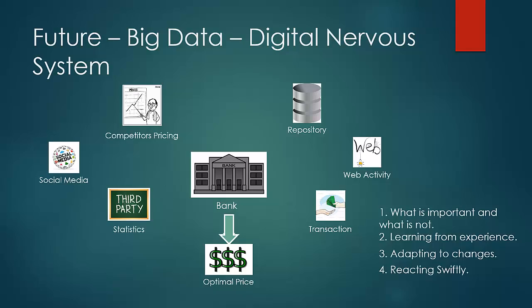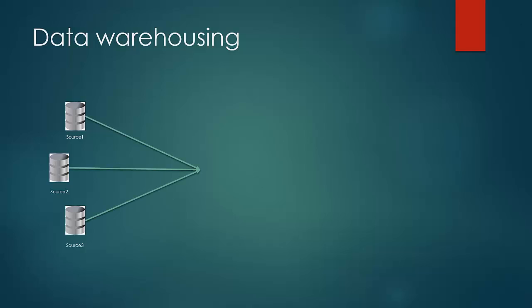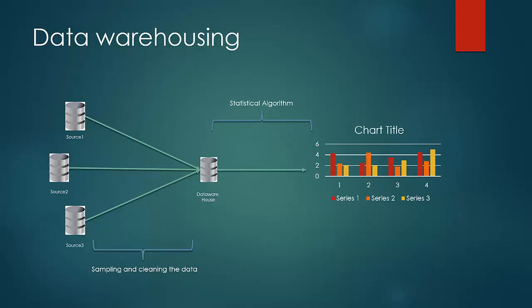Now let us see how data is used as a decision support system at present in organizations. Currently, we use data warehousing — and looking at an overview of its architecture: there would be multiple sources of data, each sampled and cleaned and put into a database known as a data warehouse. On top of this data warehouse, statistical algorithms run to create reports helpful in business decisions.